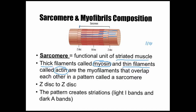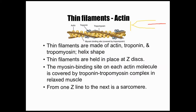A sarcomere extends from one Z disc or Z line to another Z disc or Z line. The striations are caused by patterns created by the bands. The A band — shown here in green — is the dark region because it contains the thick myosin filaments. Outside of that you have the I band, which does not contain the thick myosin filaments but contains the thin actin filaments. The I band is the light region of striated muscle, and the A band with the thick filaments is the dark region.